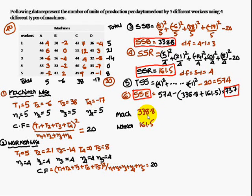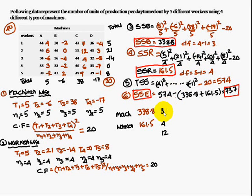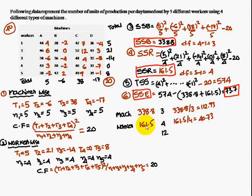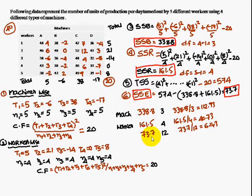In the ANOVA table, machines have degree of freedom 3 and workers have degree of freedom 4. The error degrees of freedom is 3 × 4 = 12. The mean squares are: machines MSB = 338.8 / 3 = 112.93, workers MSR = 161.5 / 4 = 40.73, and error MSC = 73.7 / 12 = 6.143.